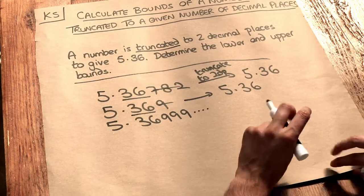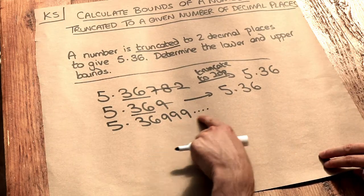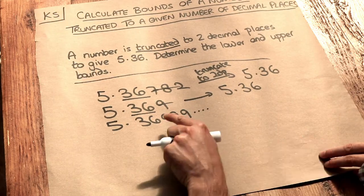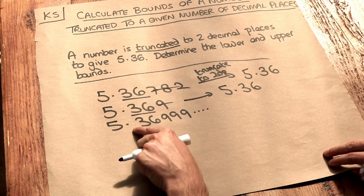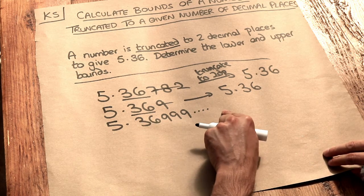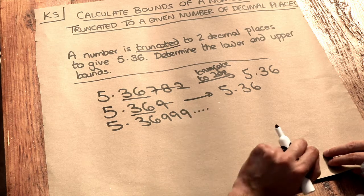So it seems to be that we could have anything up to, but not including, 5.37. Because 5.369999 is effectively equivalent to 5.37.